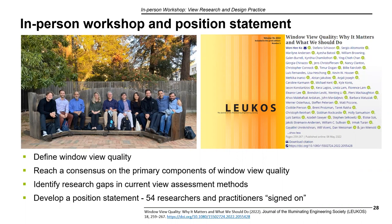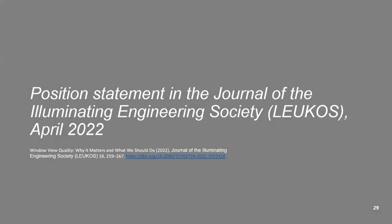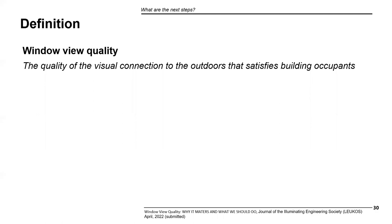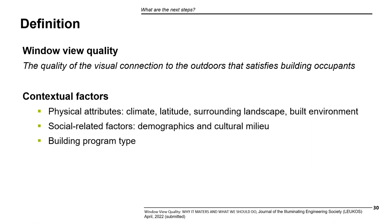We also organized an in-person workshop to engage more building science and design communities in views research. Due to COVID, we were only able to recruit a few people willing to travel to Berkeley, but we still had good discussions. We defined window view quality and reached consensus on what should be done and what the key variables are. We developed a position statement from this workshop and invited other researchers and designers worldwide to sign on if they agreed. Fifty-four people signed. We defined window view quality as the quality of the visual connection to the outdoors that satisfies building occupants. The concept is subjective — observer dependent — and influenced by physical attributes, climate, latitude, surrounding landscape, and social factors like demographics, culture, and building program types.